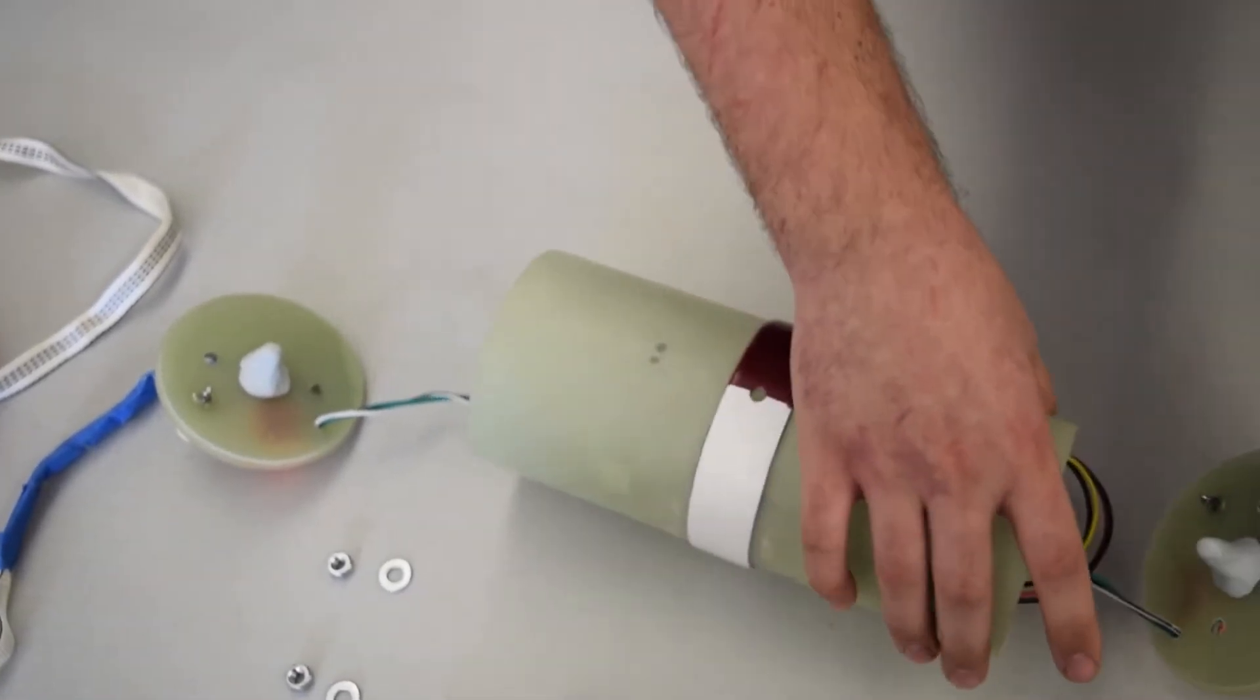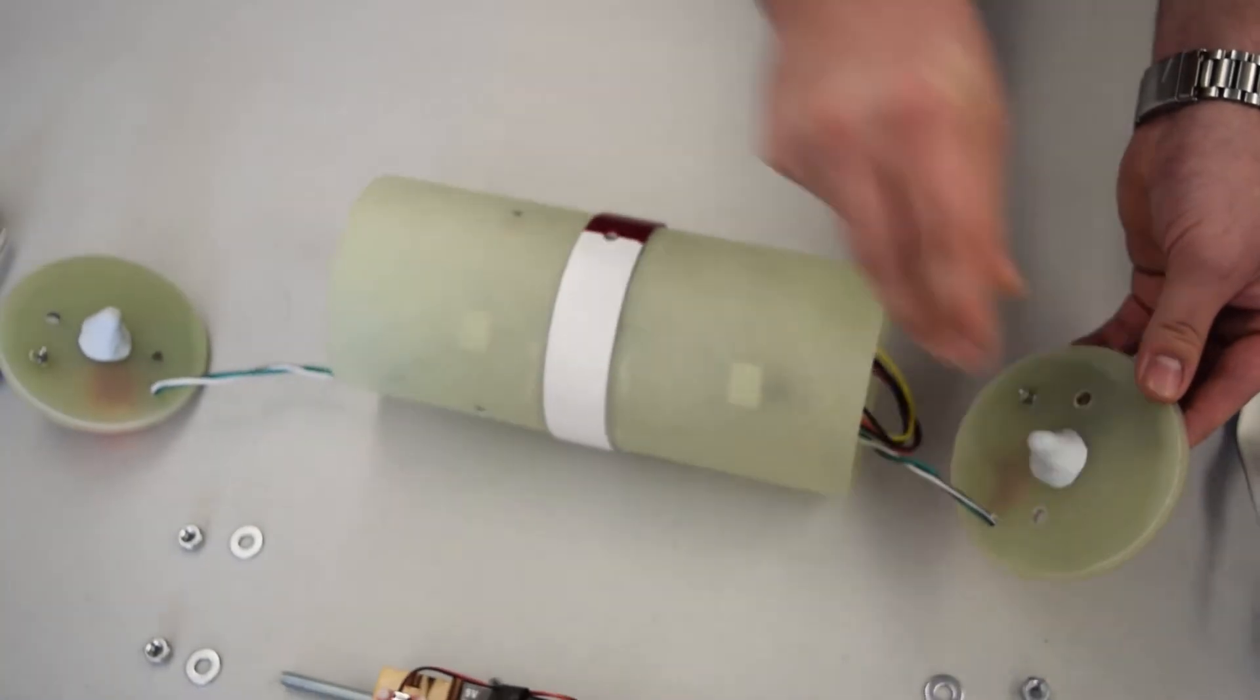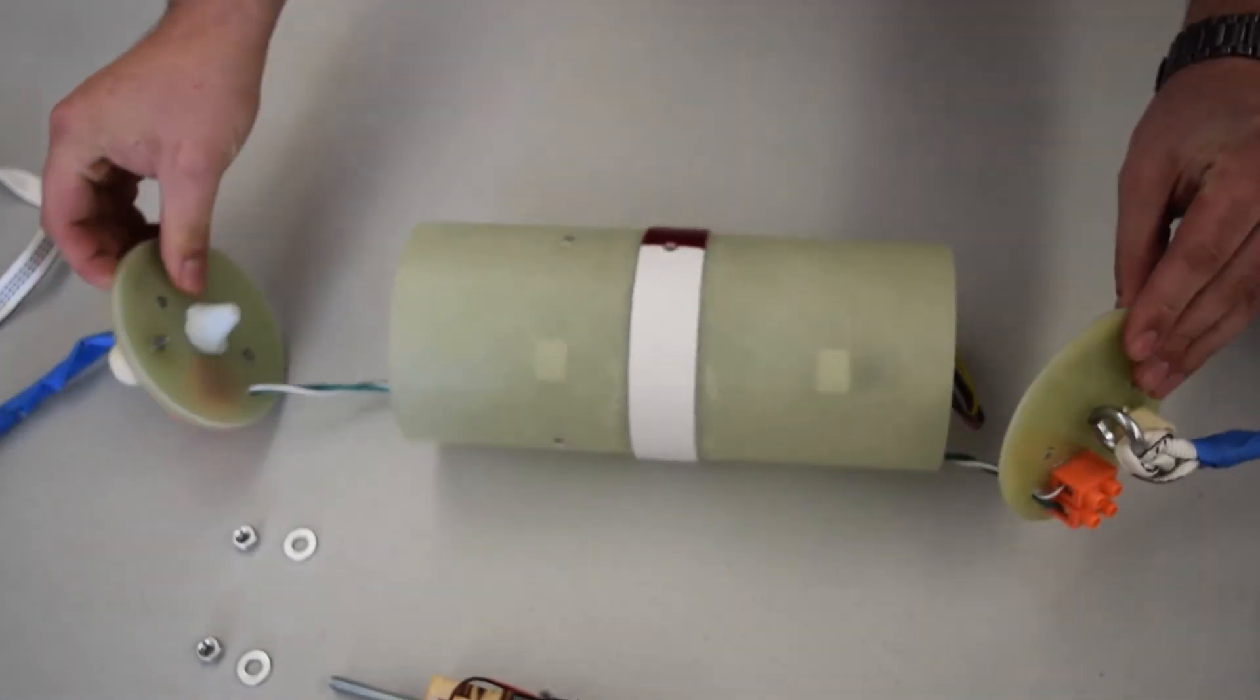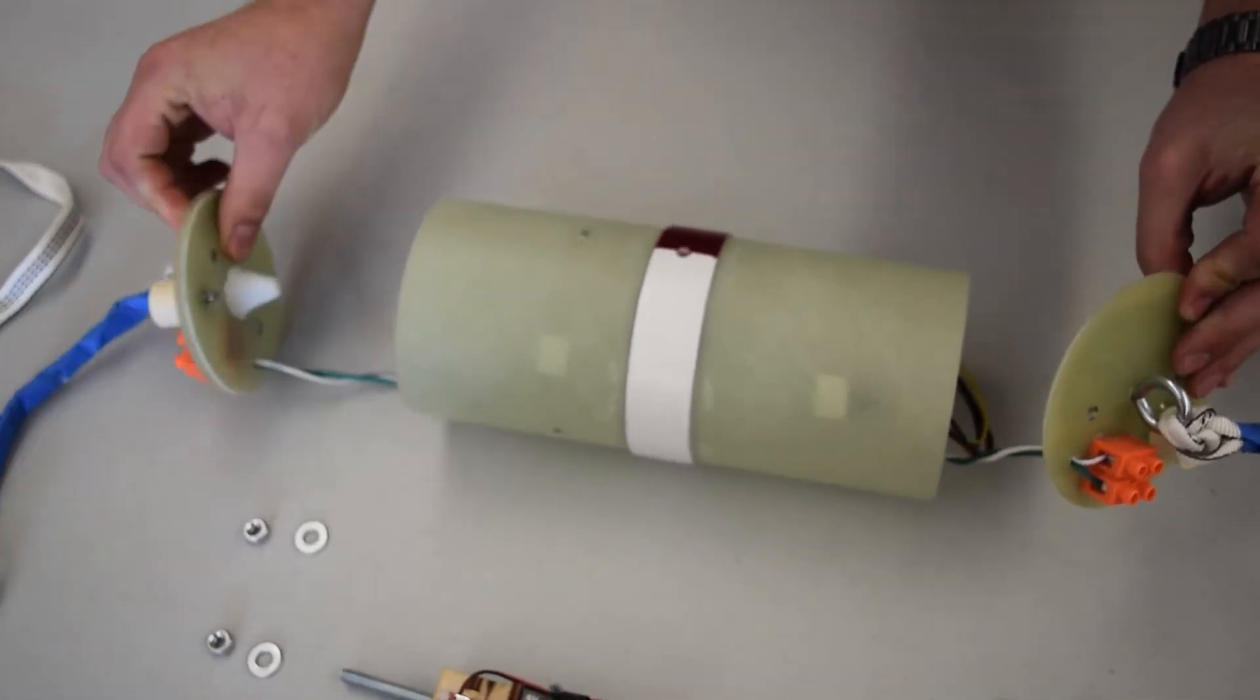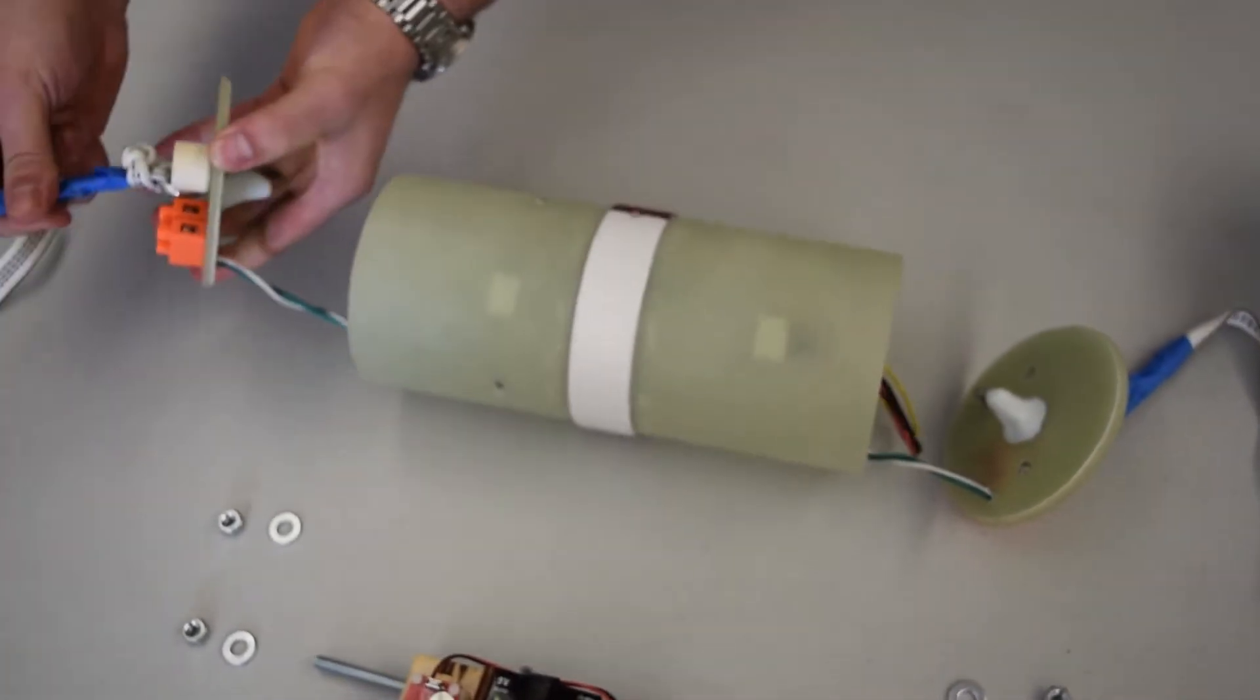And then on the bulkheads on either side, you can see that we used epoxy clay to hold these eye bolts from going anywhere. That's so when the parachute hits, it's not going to take that off on either one.